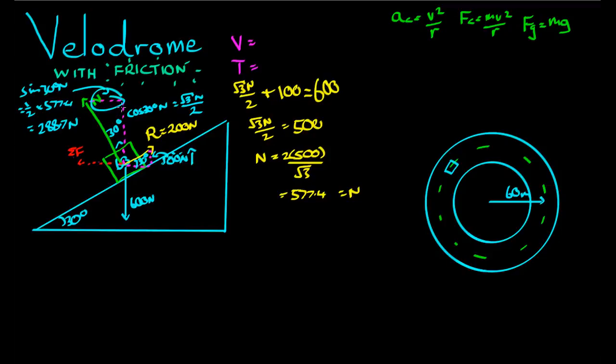That is this component of the normal force. In previous question, this component of the normal force supplied all of the centripetal force, because there were no other forces acting in the horizontal direction. Not this time, because this time, this part of the frictional force is also acting in the horizontal direction. So what's the size of that force? That's cos 30 degrees times r, which is root 3 on 2 times 200, which is around 173.2 newtons.